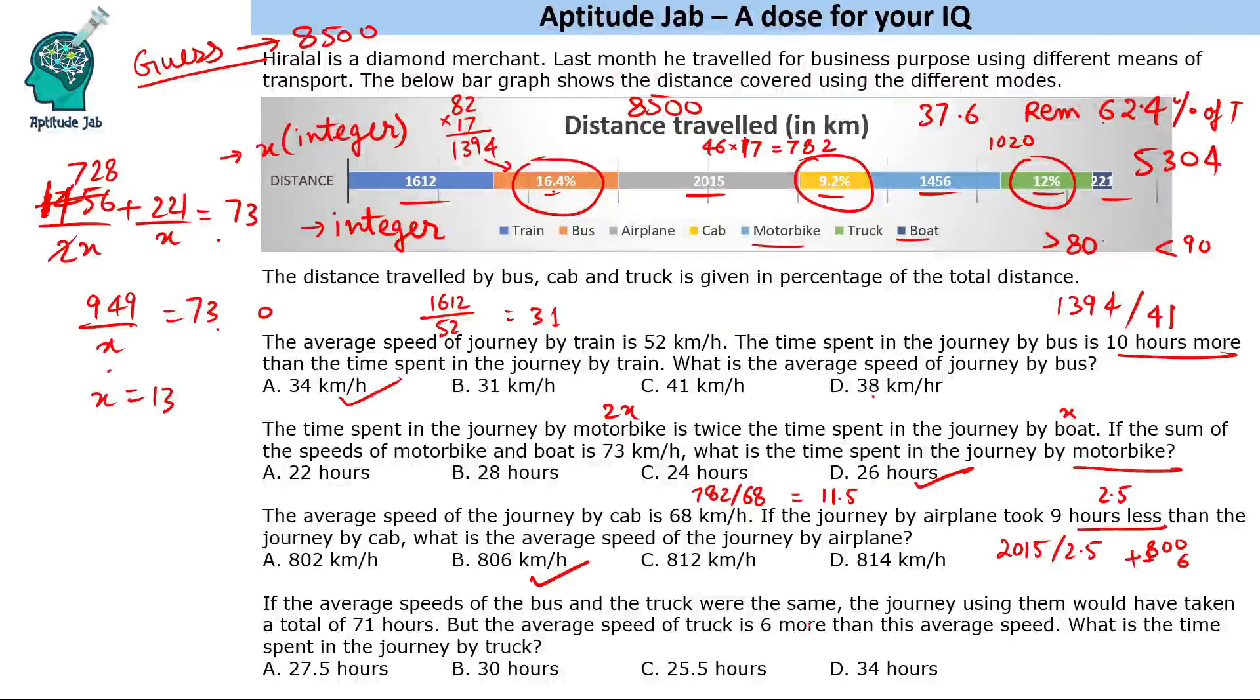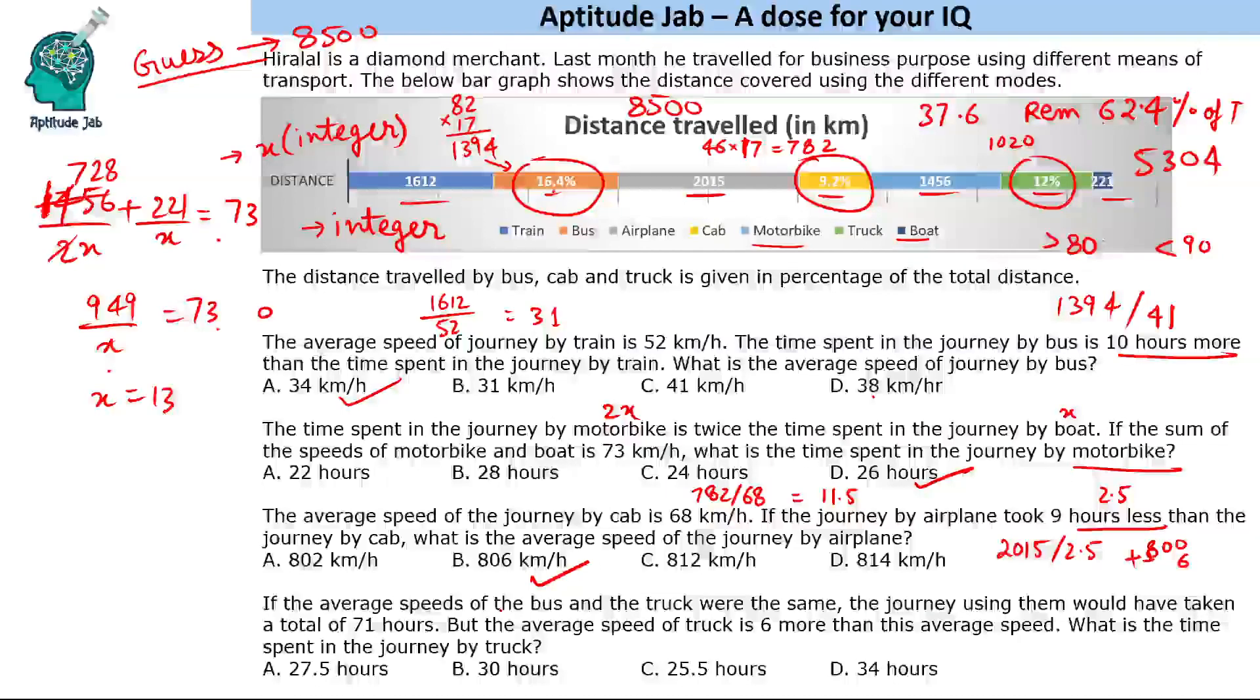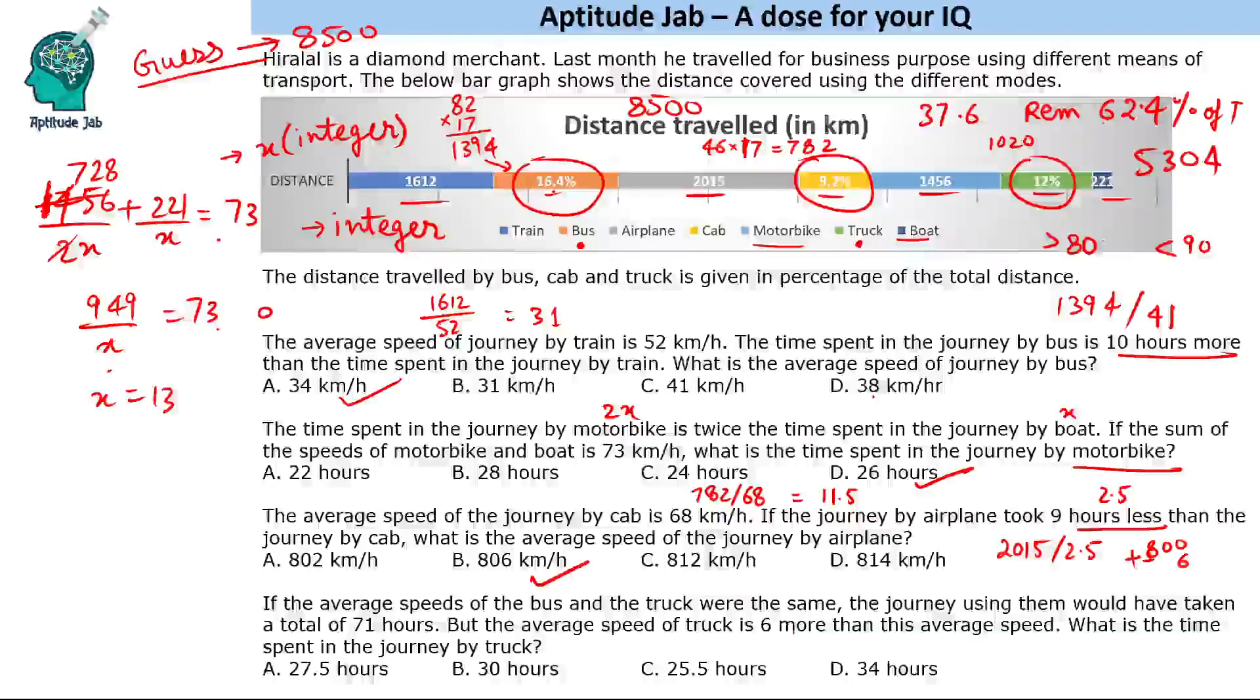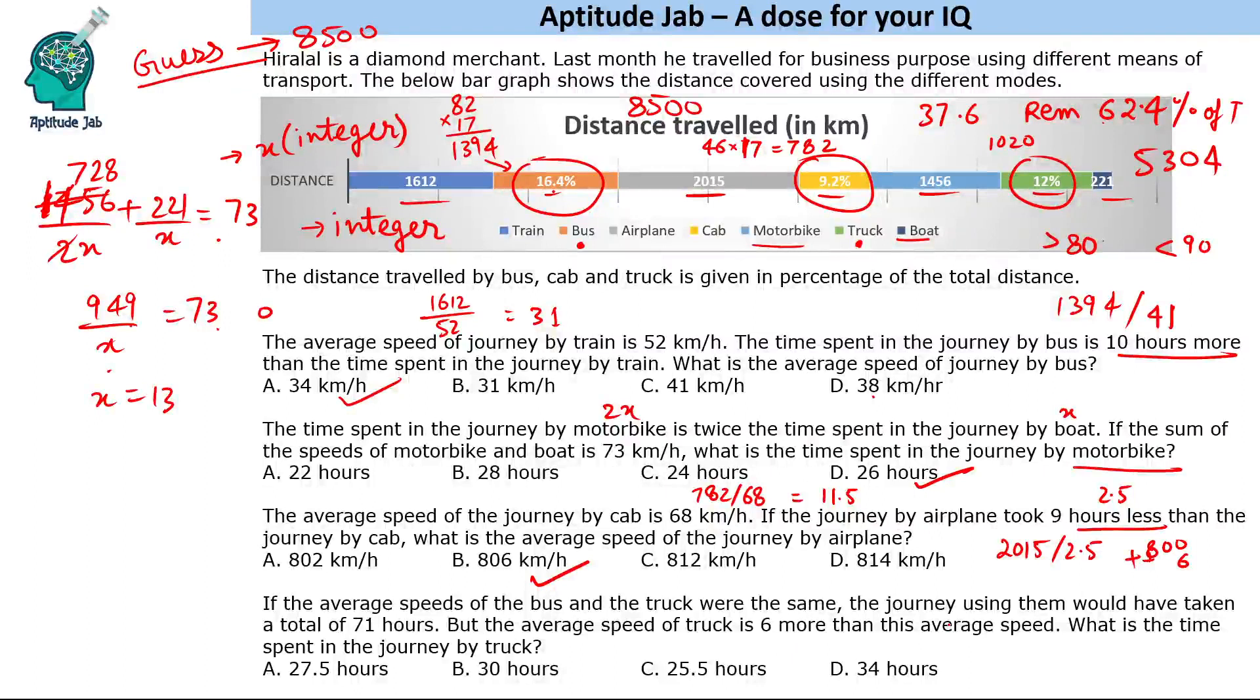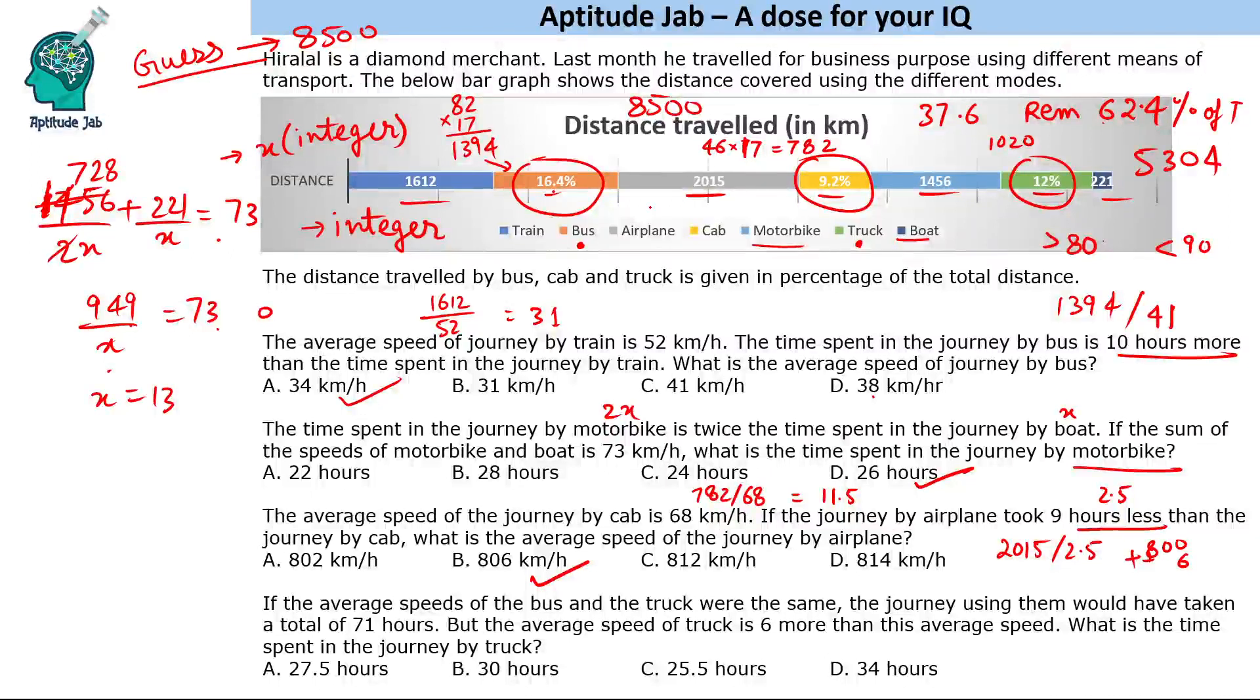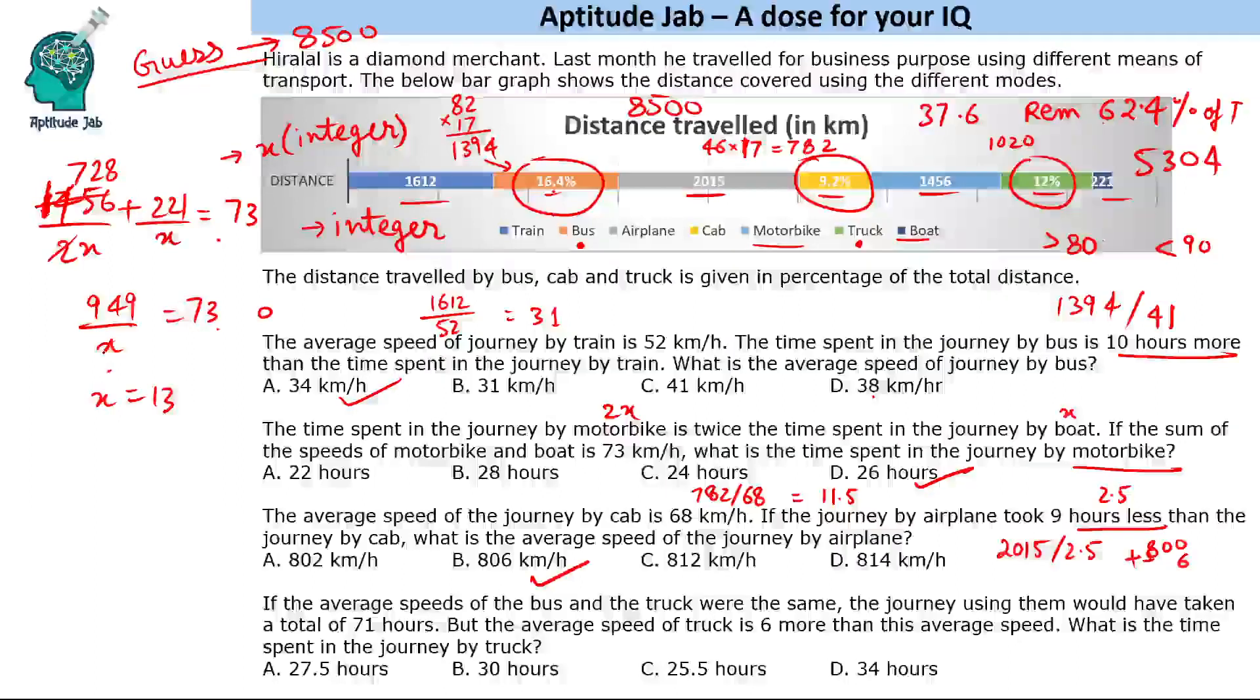If the average speeds of the bus and the truck were the same, the journey using them would have taken a total of 71 hours. But the average speed of truck is 6 more than this average speed. What is the time spent in the journey by truck? So let us do this. If they had the same speed, their journey would have been 71 hours. So what is the distance covered by bus plus truck? That is 1394 plus 1020.